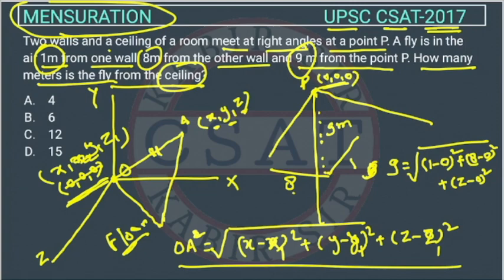What we can do? This will be 81. Is equal to 1 plus this will be 64 plus z square. So this z square is equal to 81 minus 1 minus 64.